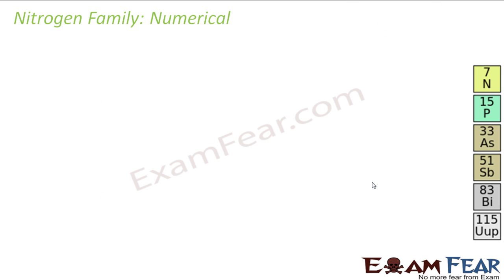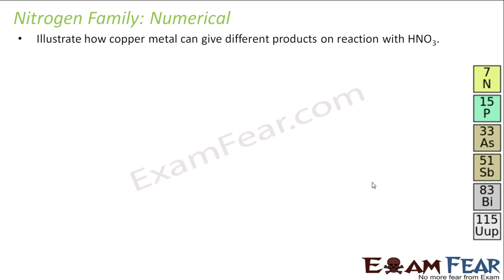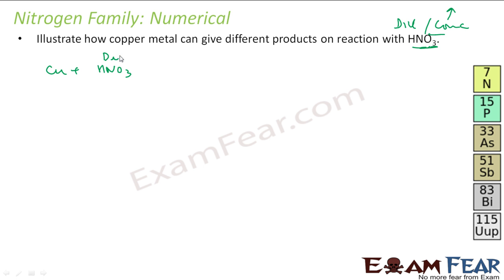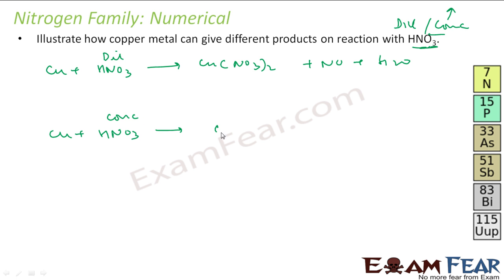The next question: illustrate how copper metal reacts with nitric acid to give different products. Concentrated and dilute nitric acid give different products. Copper reacted with dilute nitric acid gives Cu(NO3)2 + NO + water. Copper reacted with concentrated nitric acid gives Cu(NO3)2 + NO2 + water. So dilute and concentrated nitric acid give different products.